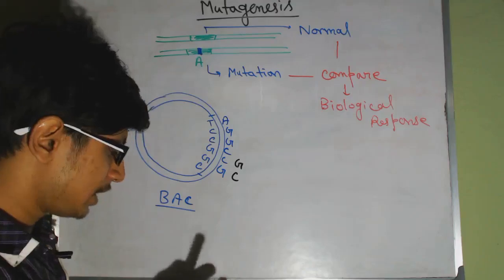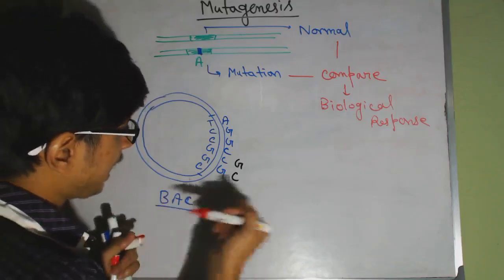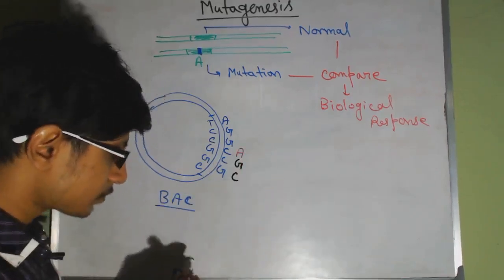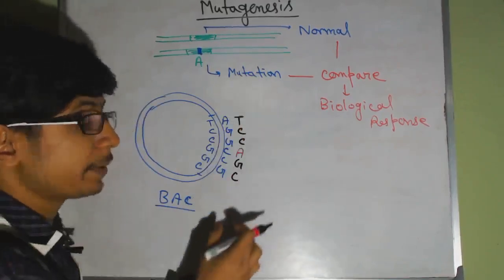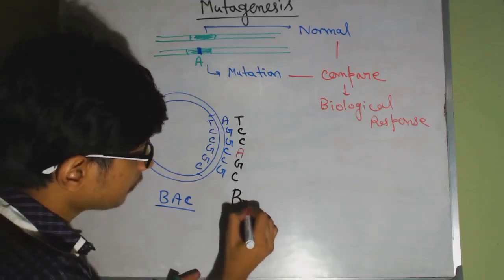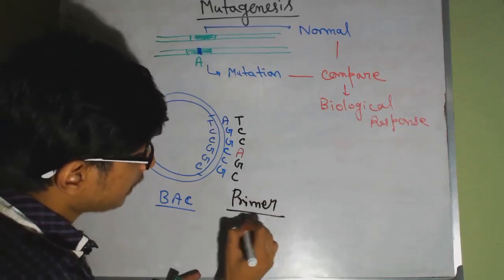Instead of C, obviously it should be G. But instead of G, we place an A in that primer. And then the rest of the things are similar. So this is our primer. This is the primer and the primer contains the mutation.